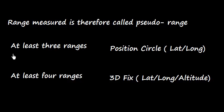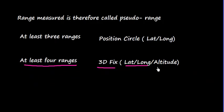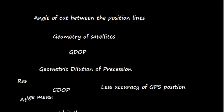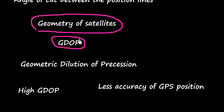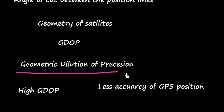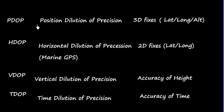At least three ranges are required for a position circle in order to obtain a position in latitude and longitude. Similarly, at least four ranges are required to make a 3D fix, three-dimensional fix, which simply means in the form of latitude, longitude, and altitude. The angle of cut between the position lines determines the geometry of a satellite, and this is called GDOP, which means geometric dilution of precision. High GDOP means less accuracy of GPS position and vice versa. If there is a low GDOP value, the position is accurate.